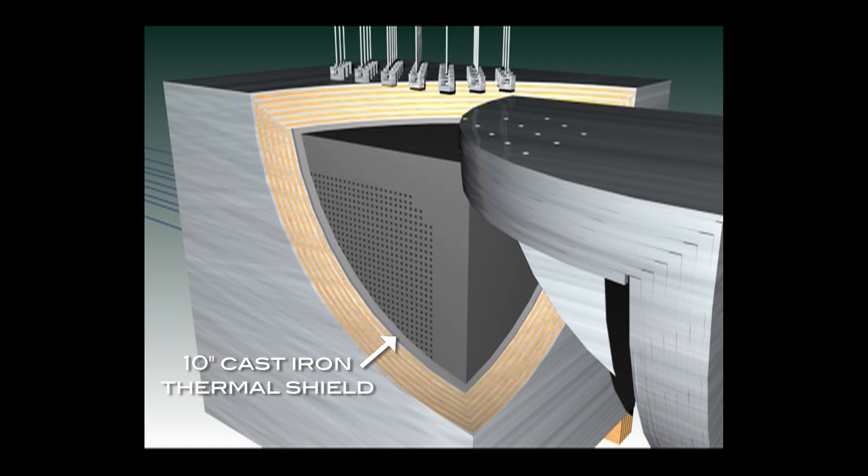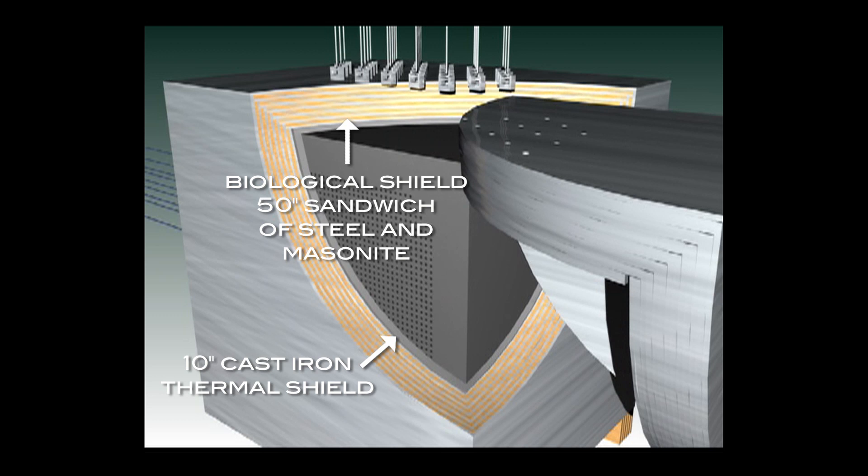before they reach the environment outside the reactor. The next shield barrier is a 50 inch sandwich of steel and masonite. The hydrogen atoms in the masonite slow down escaping fast neutrons, and the steel captures the remaining slow neutrons and gamma rays.